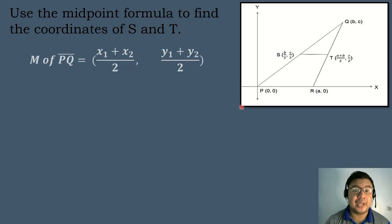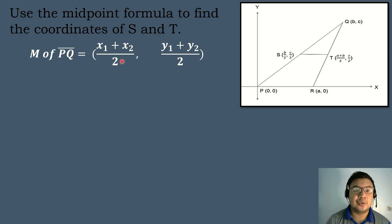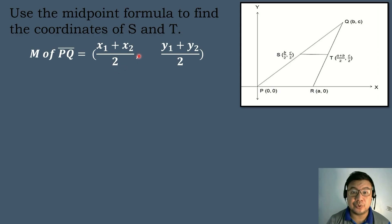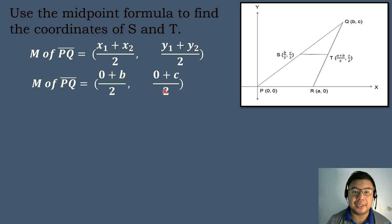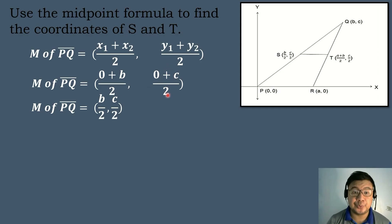Let's apply the midpoint formula to get the coordinates of point S. To find the midpoint of segment PQ, the formula is ((x₁ + x₂)/2, (y₁ + y₂)/2). Substituting: ((0 + B)/2, (0 + C)/2) = (B/2, C/2). So point S has coordinates (B/2, C/2).